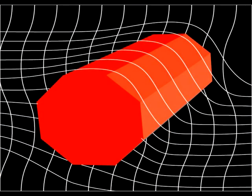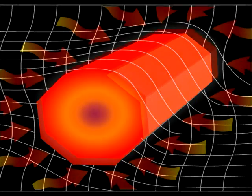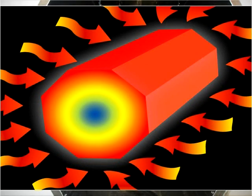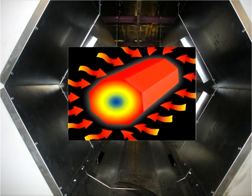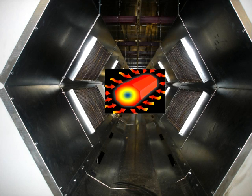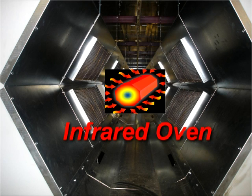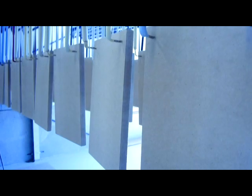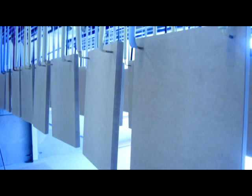A faster, more direct way to heat is through radiation — more specifically, infrared or IR radiation. Infrared radiation heats by transferring energy through space directly to the material being processed. This heats products faster and improves efficiency, as it avoids the need to heat all the surrounding air.